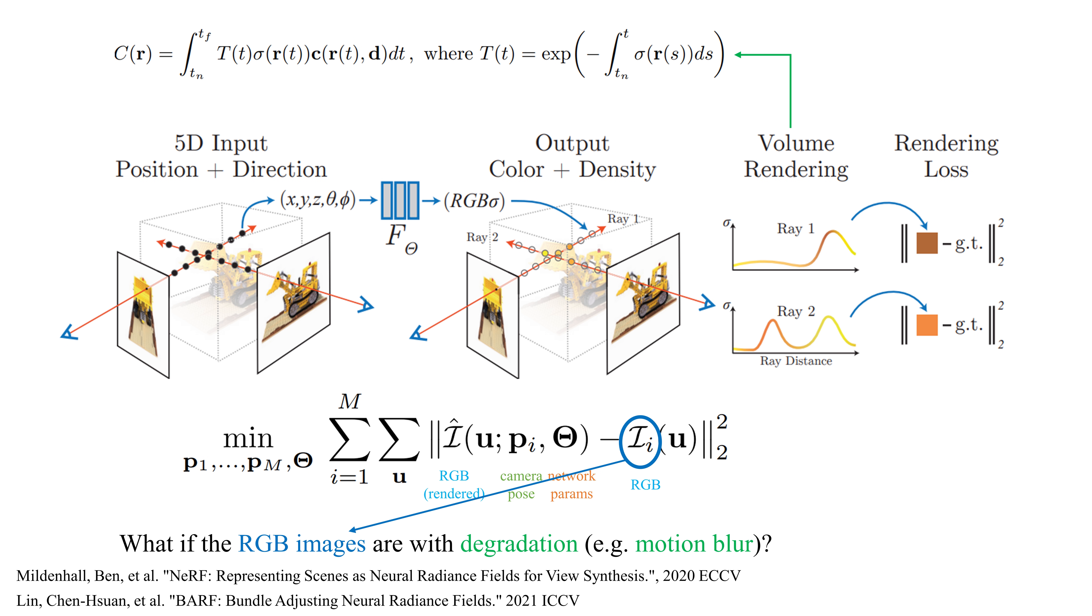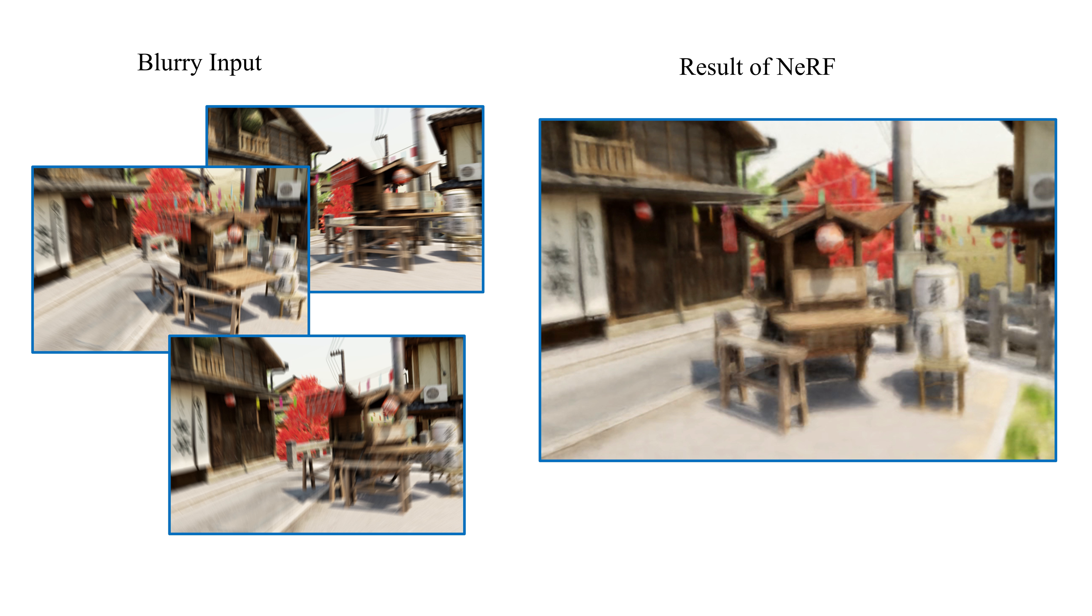However, what if the training images are with degradation, for example, motion blur? NeRF usually assumes the training images are sharp. Thus, motion-blurred images violate this assumption and the accurate camera poses are also hard to obtain from blurry images due to the difficulties of detecting and matching salient key points.